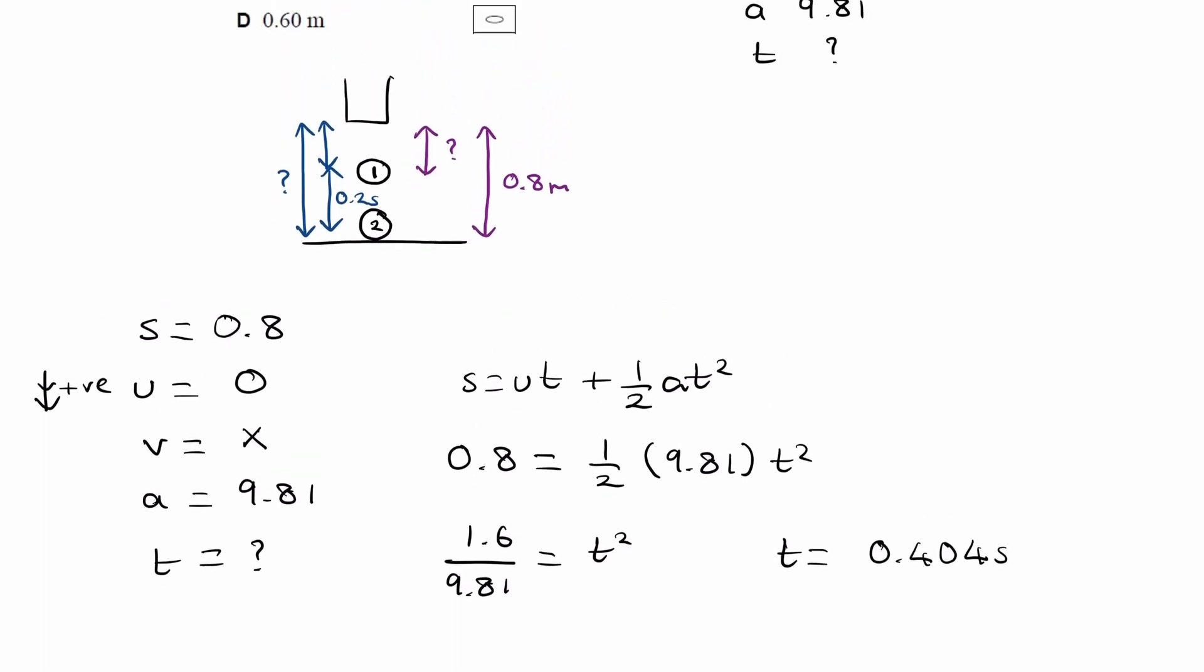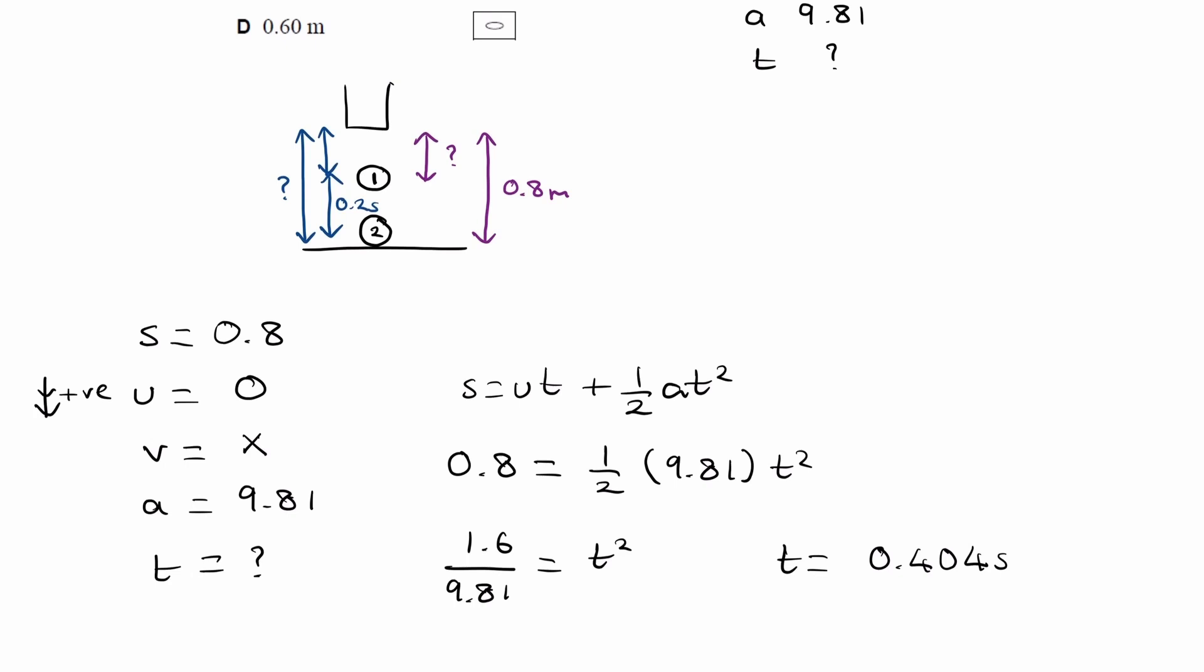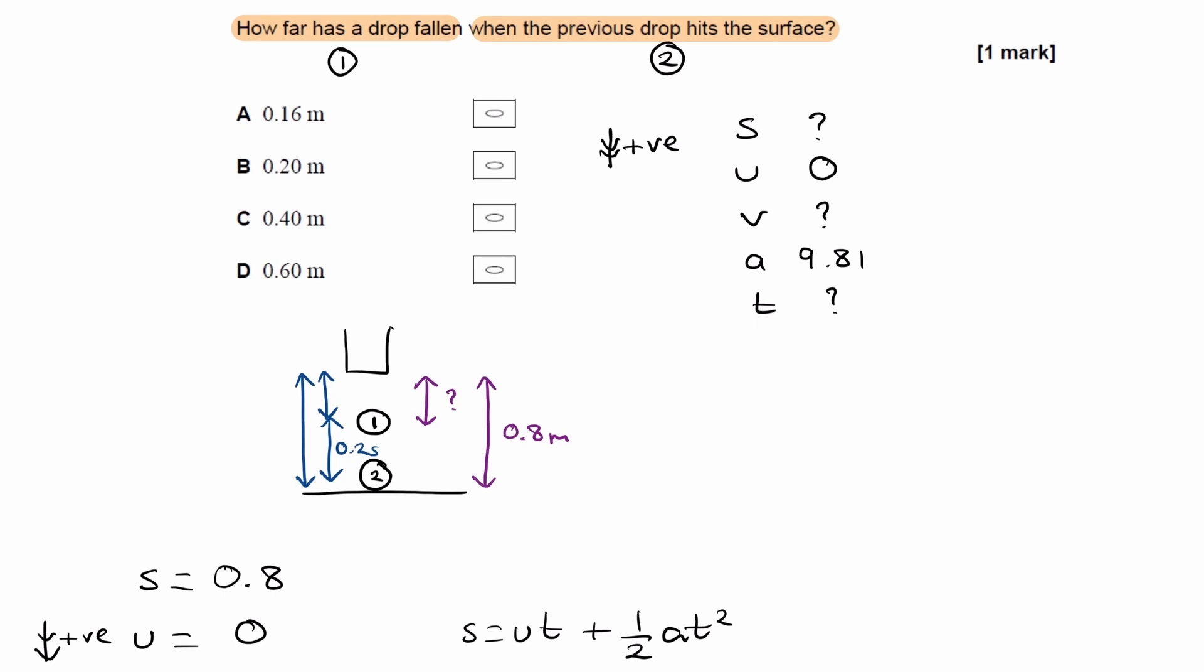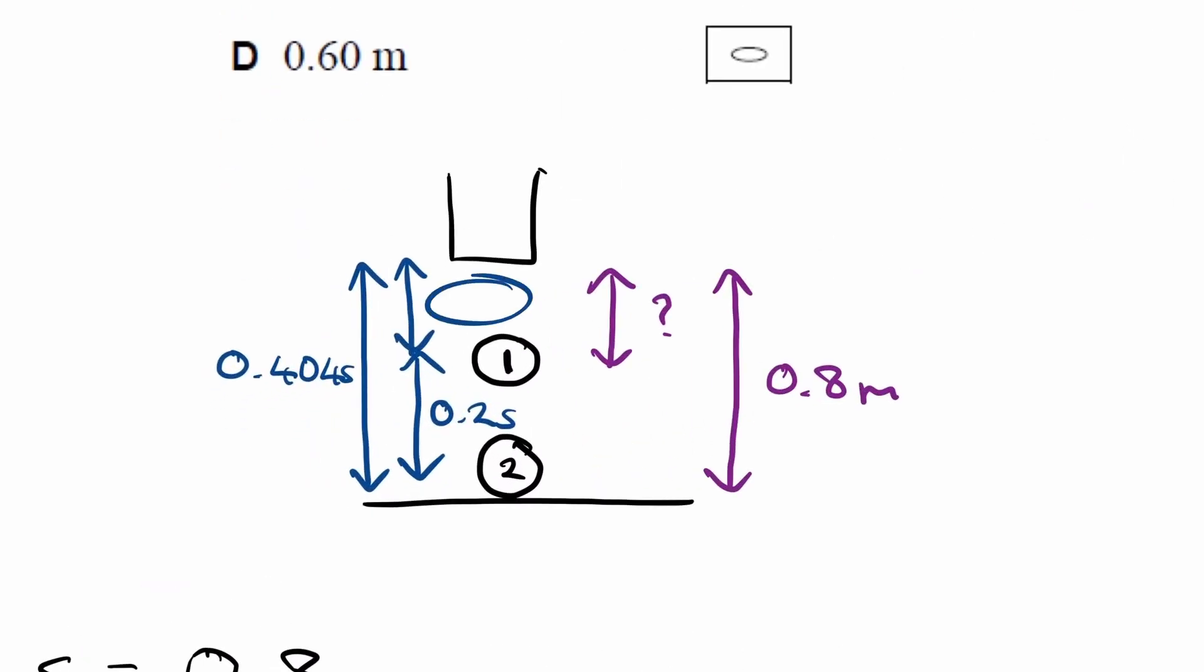So let's represent this in our diagram. That is, what we've just worked out there, is the time for drop two to hit the surface. So that was 0.404 seconds. And if that is 0.404, this time, if we take away the 0.2, must therefore be 0.204 seconds. So that's how long drop one has been falling for from the tap.